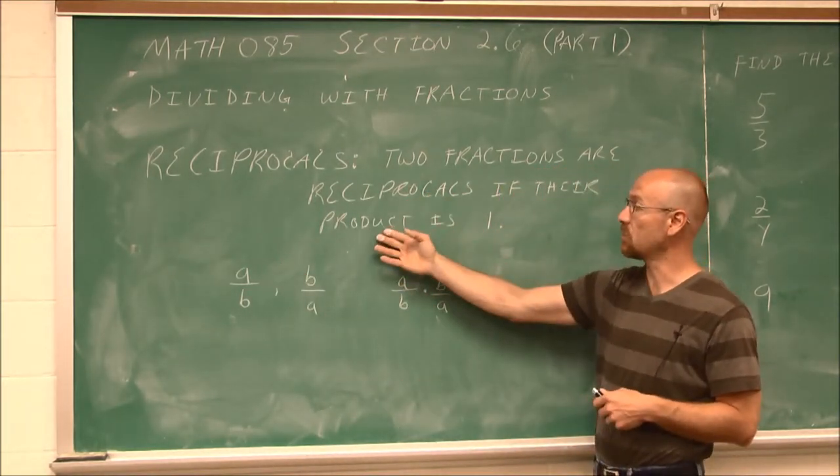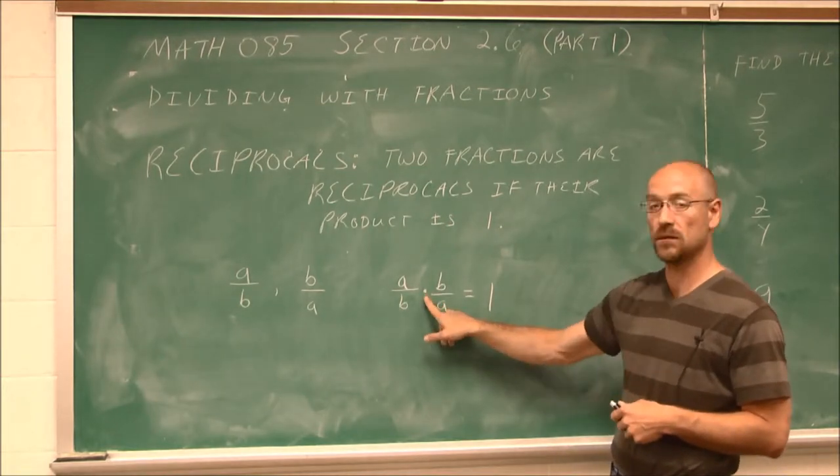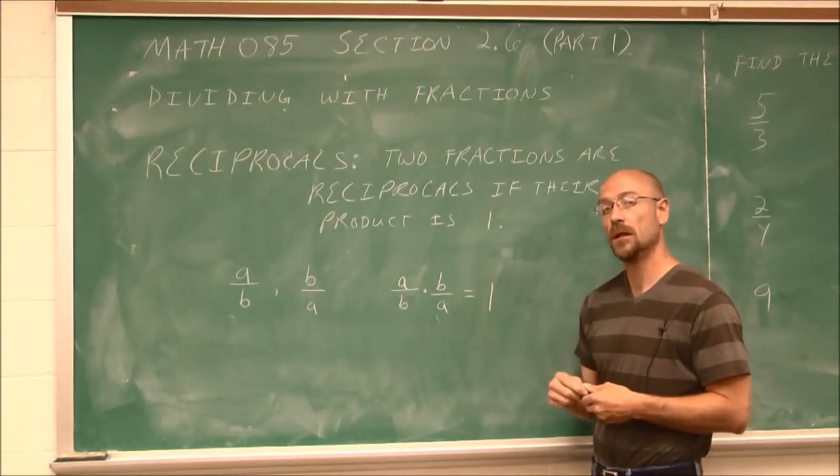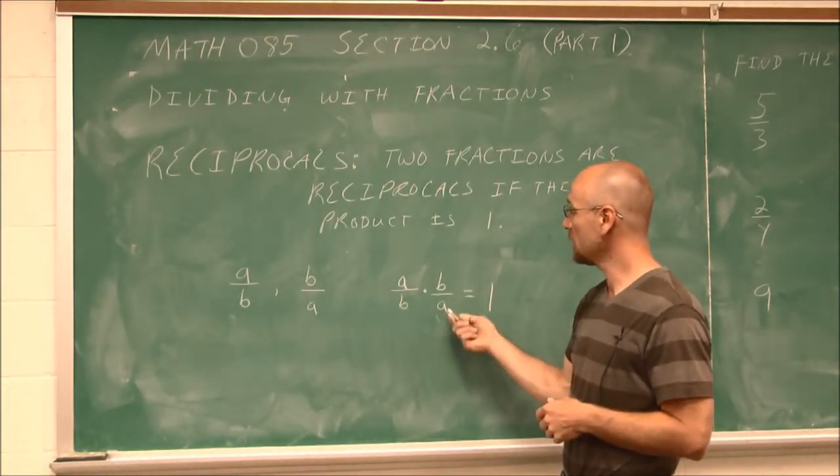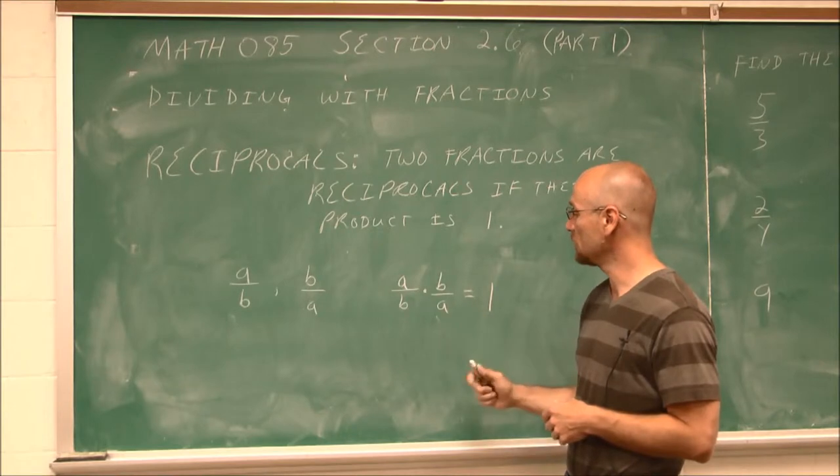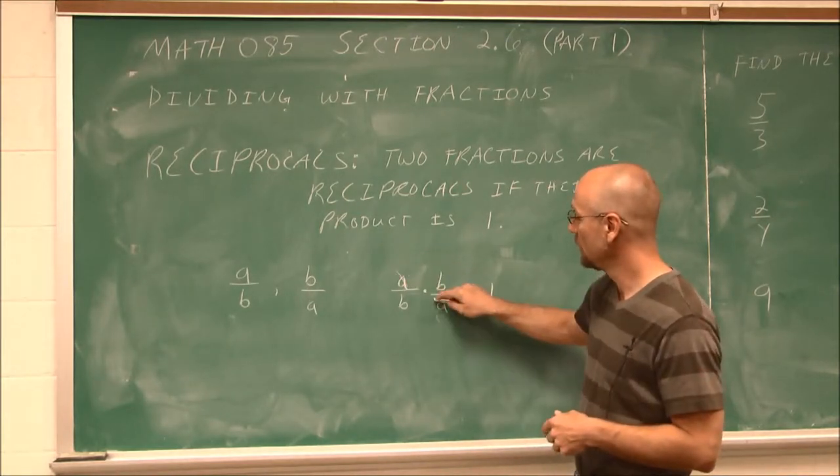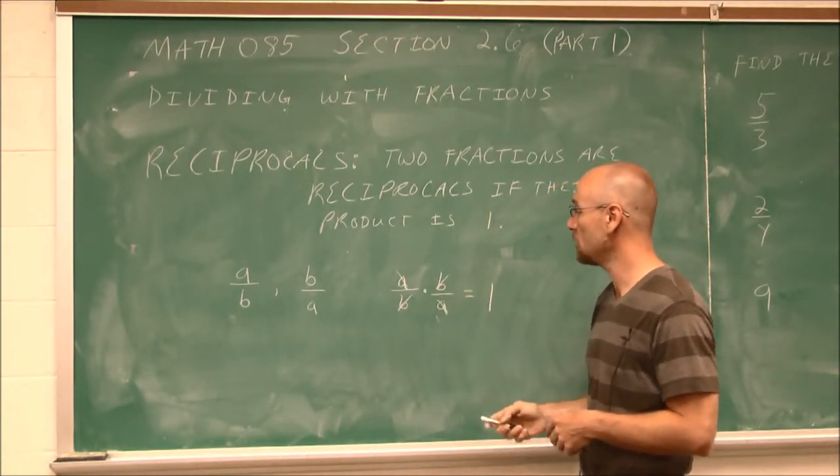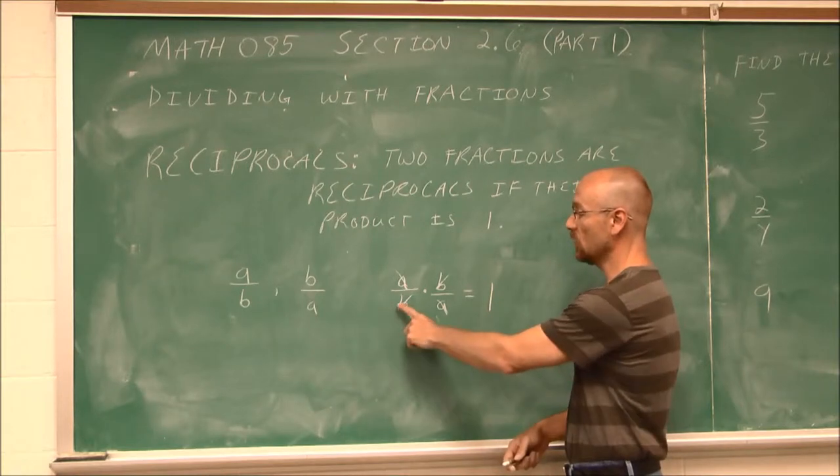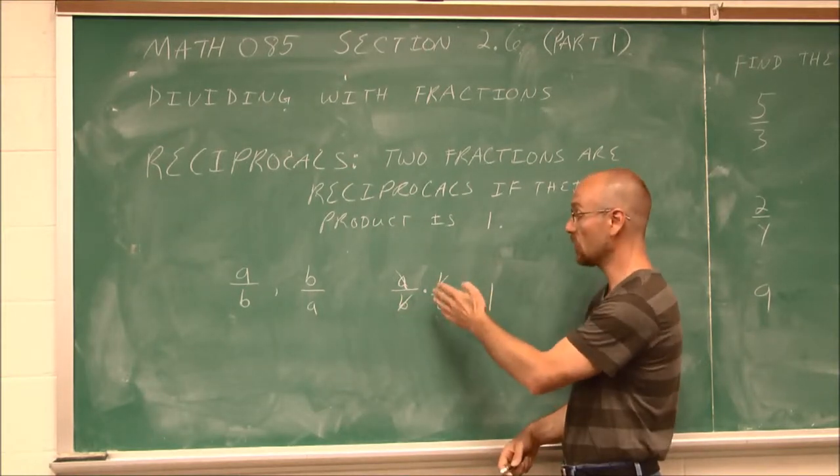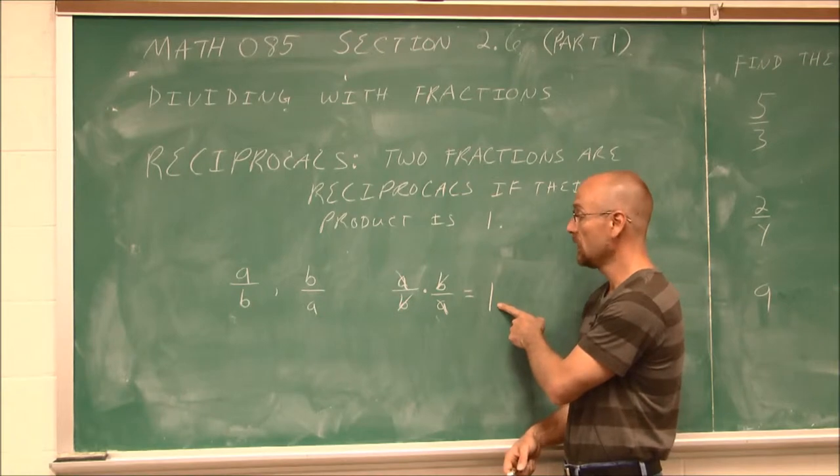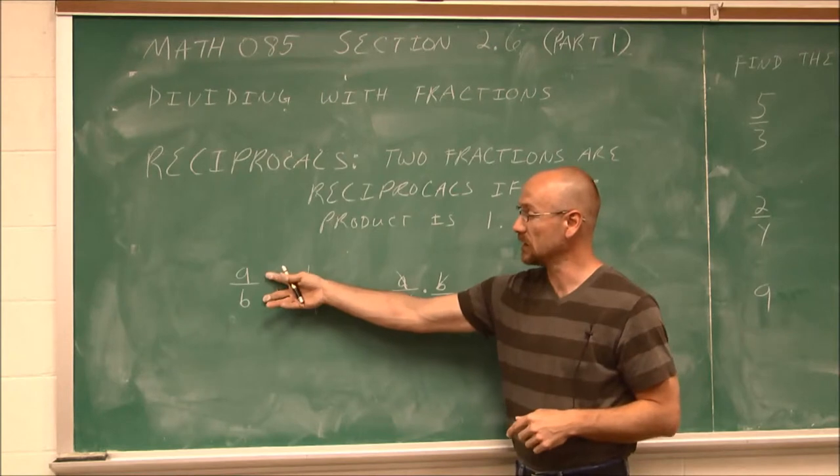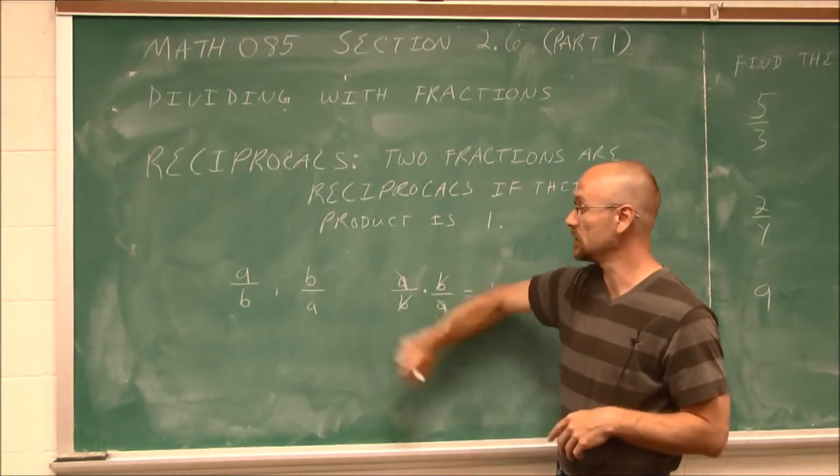Now, the product is 1, and product means to multiply. If I multiply these two together, I will get 1. Let's see why. An a on top will reduce an a on the bottom. They reduce to 1. A b on the bottom will reduce a b on the top to 1. So now I have 1 times 1 over 1 times 1. Well, 1 over 1 is the same thing as 1. So we see that holds true. A reciprocal is just flipping our numerator and denominator.